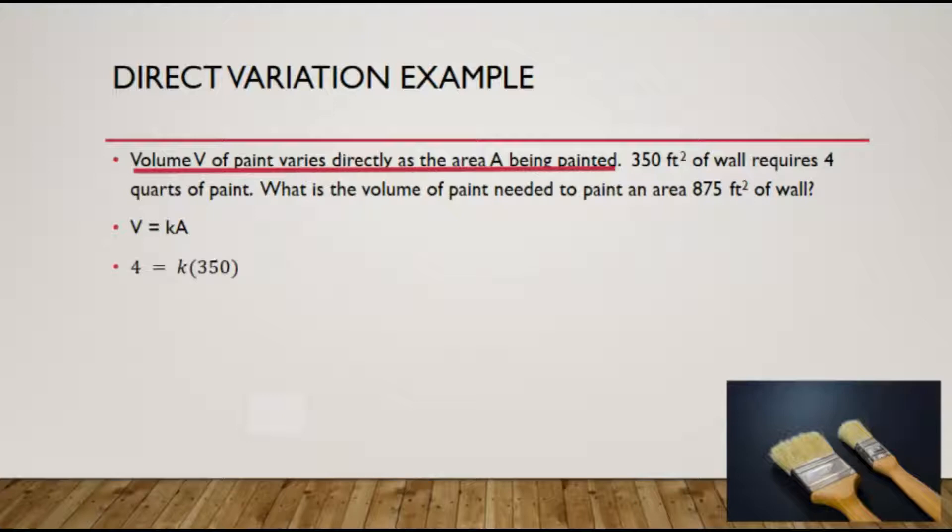Replacing those values in our equation, 4 quarts when painting an area 350, replacing the A value, we now have an equation with one unknown. Solving for k, we will divide both sides by 350.